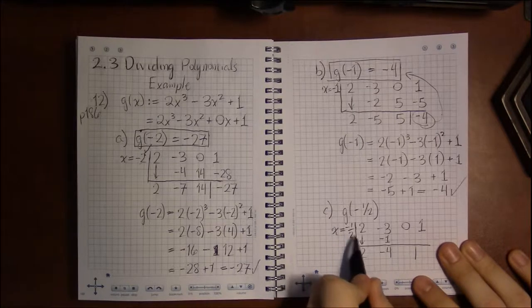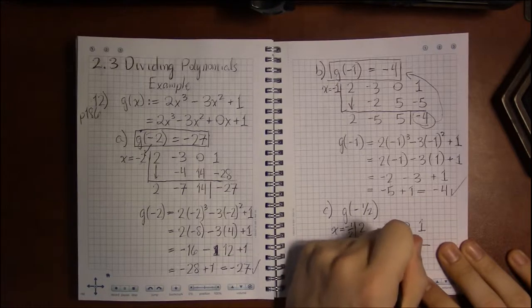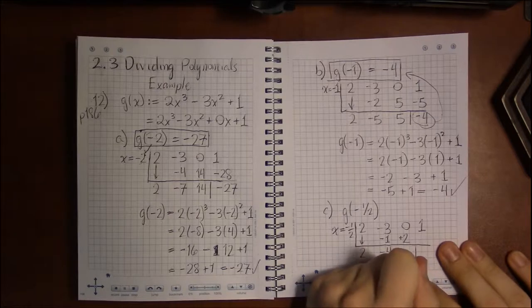So we add to get down. Multiply. Half of 4 is 2. And a negative times a negative is a positive. Add to get down. 0 plus 2 is 2.